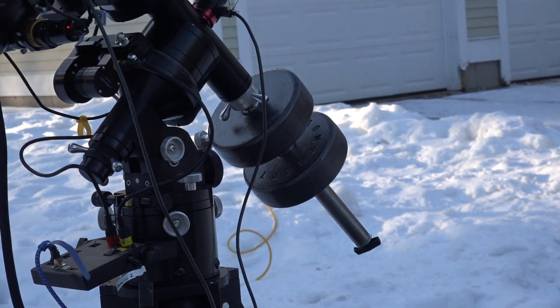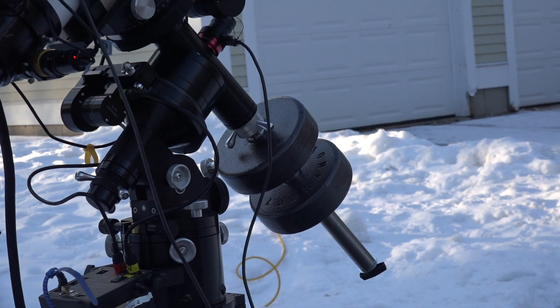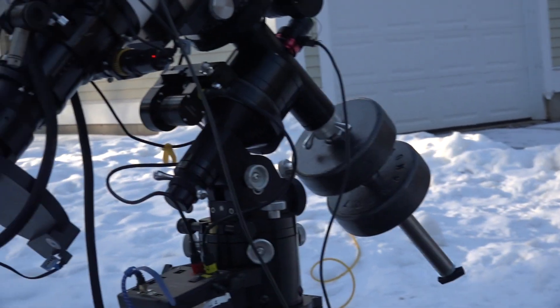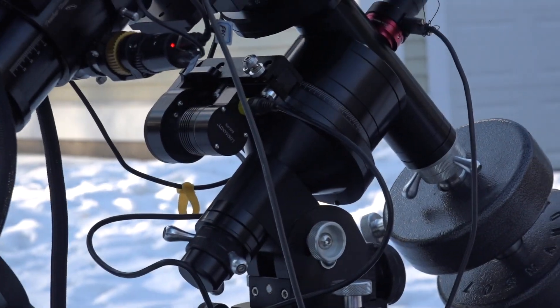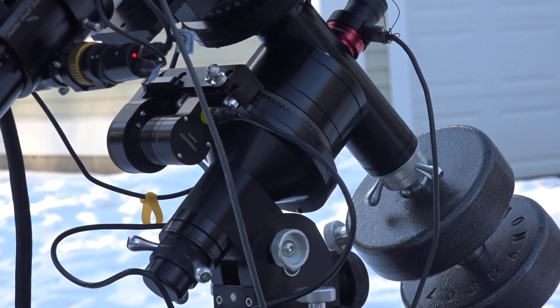The tracking mount has 42 pounds of counterweight on it in order to provide balance with the main telescope and two drive motors. They drive it both in right ascension and in declination.